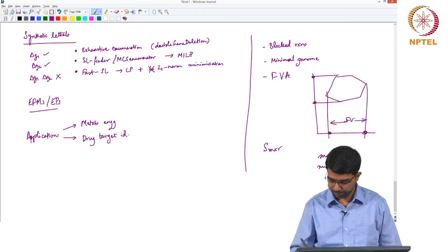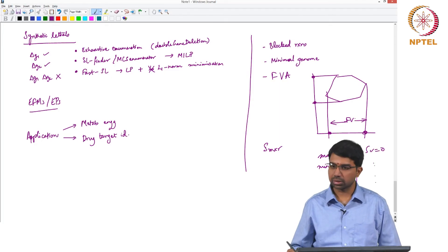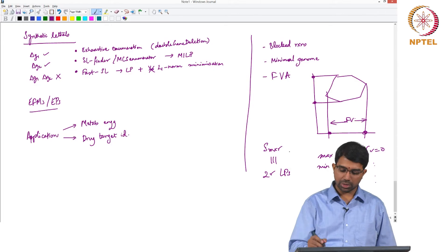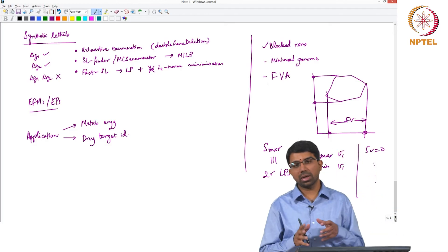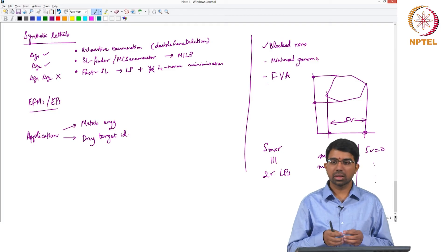This is flux variability. So flux variability analysis basically does this. So if you have a stoichiometric matrix M cross R, how many LPs do you need to solve to compute flux variability? How would you compute this point? Max V1, min V1, all the time such that SV equal to 0, etc. So you will have 2R LPs that you need to solve. This will also tell you all the blocked reactions and so on. And remember of course very importantly flux balance analysis gives you an insight into the metabolic capabilities.